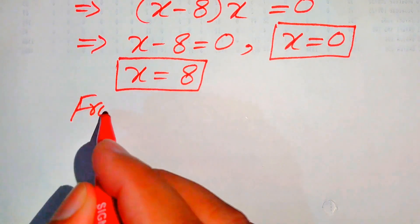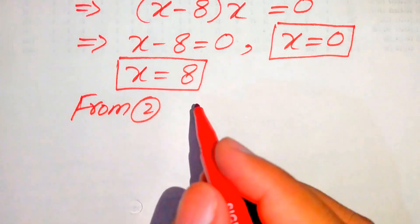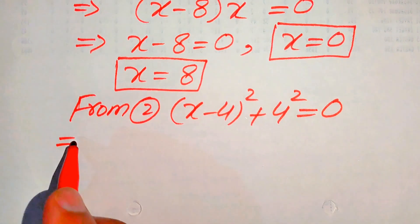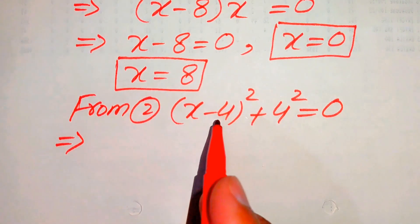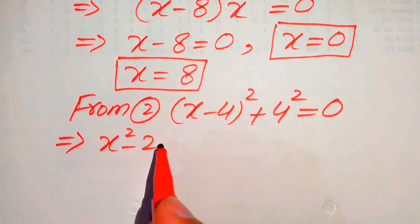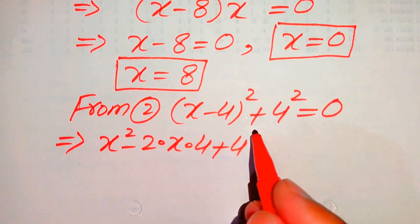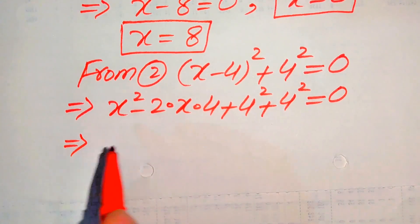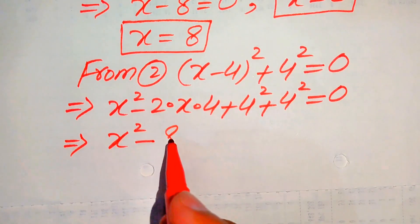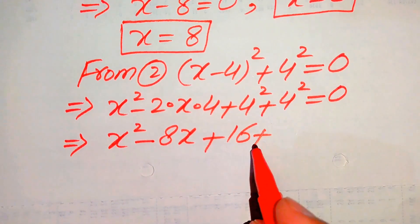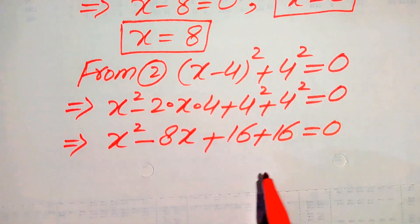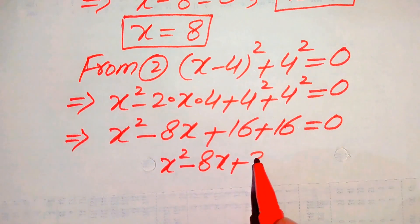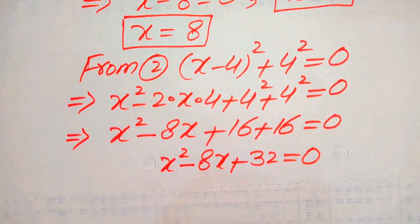Now moving to Equation 2: (x minus 4) squared plus 4 squared equals 0. We expand (x minus 4) squared using the formula a squared minus 2ab plus b squared, giving x squared minus 8x plus 16 plus 16 equals 0, which simplifies to x squared minus 8x plus 32 equals 0.